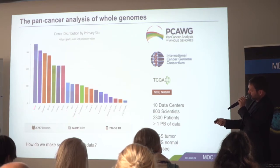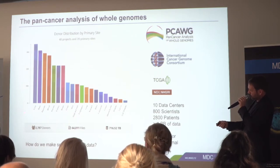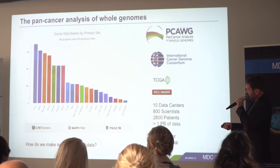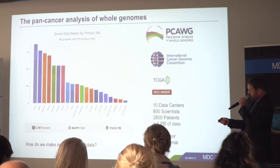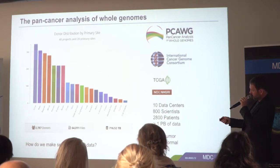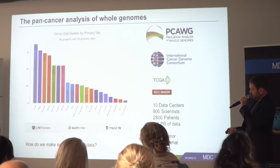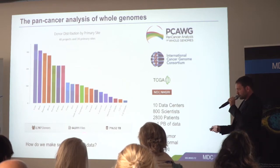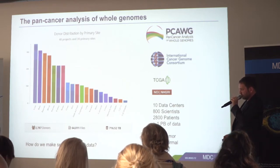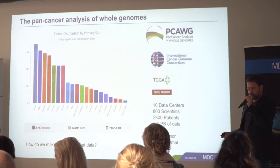The goal was to understand tumor heterogeneity and the effects of mutations across a wide variety of cancer types — liver cancer had the highest number of samples, and cervical cancer is kind of declining because people get vaccinated, which is good. The main question remains: how do we make sense of all that data? This is where machine learning comes in.